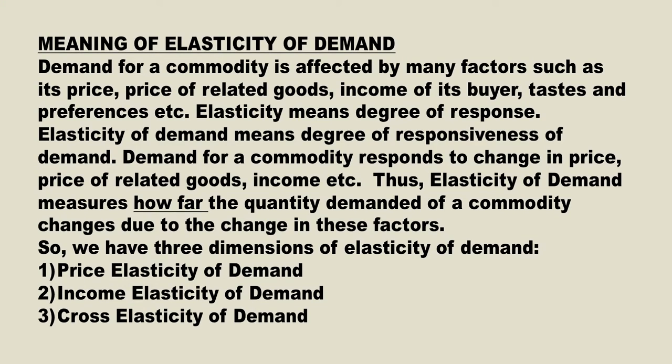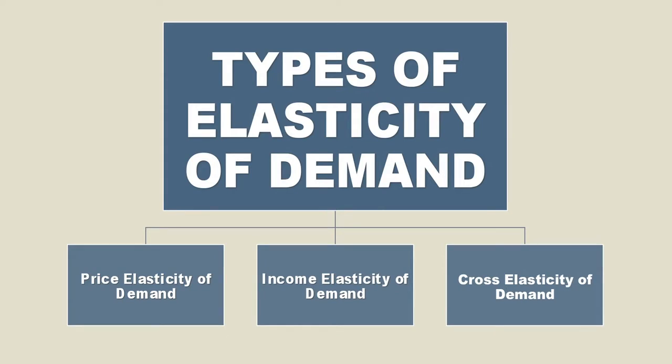By the definition itself, we can find out the three dimensions of elasticity of demand. According to the factors affecting the demand for a commodity, we have three types of elasticity of demand: price elasticity of demand, income elasticity of demand, and cross elasticity of demand.